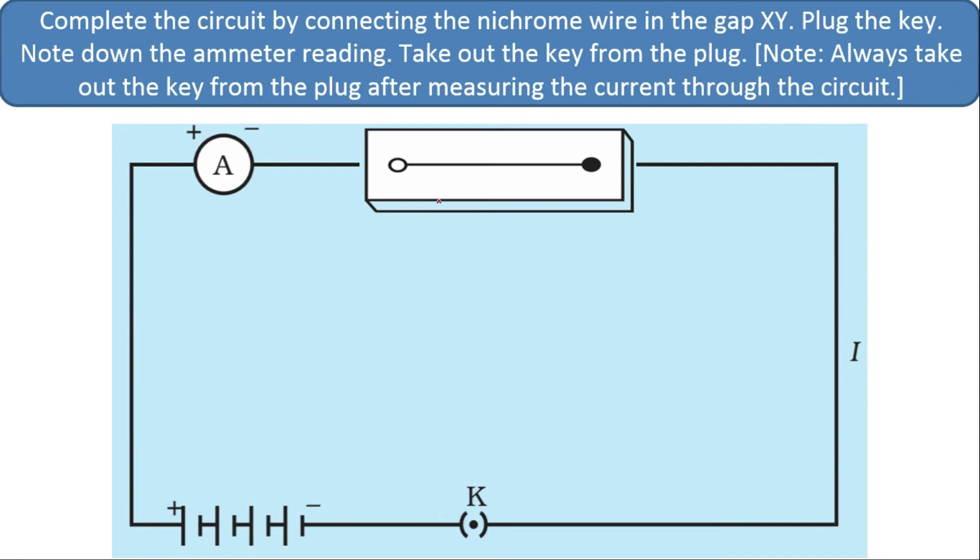Now complete the circuit by connecting nichrome wire in the gap XY. Plug the key, note down the ammeter reading. Take out the key from the plug. Always take out the key from the plug after measuring the current through the circuit. This is the precaution or measure which you have to take.